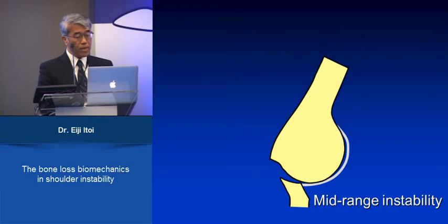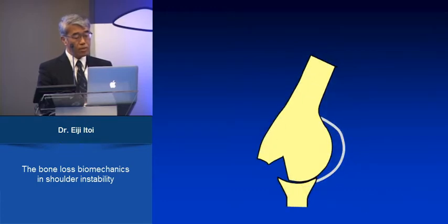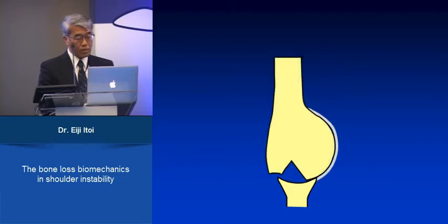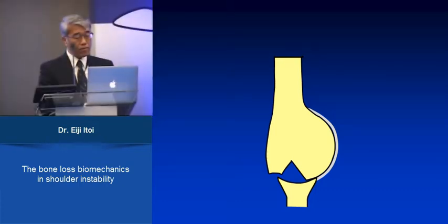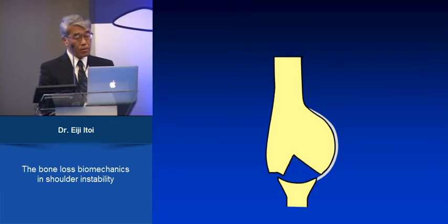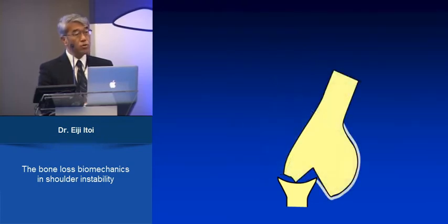On the other hand, the Hill-Sax lesion has nothing to do with mid-range instability. When the arm is at end range, if the Hill-Sax lesion is covered by the glenoid, it's safe and causes no instability. However, if the Hill-Sax lesion is larger than the glenoid socket, then it engages and dislocation occurs. So the Hill-Sax lesion is related to end-range instability.